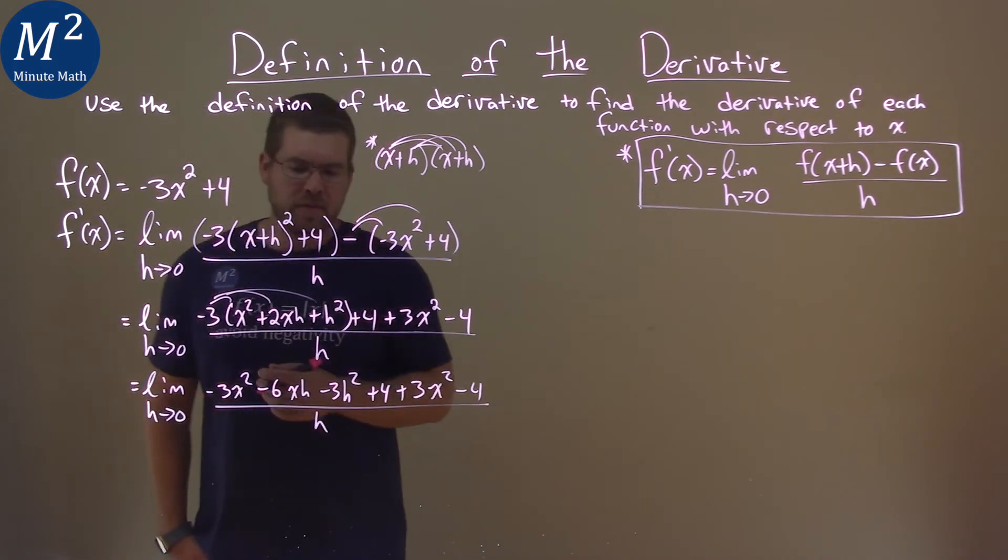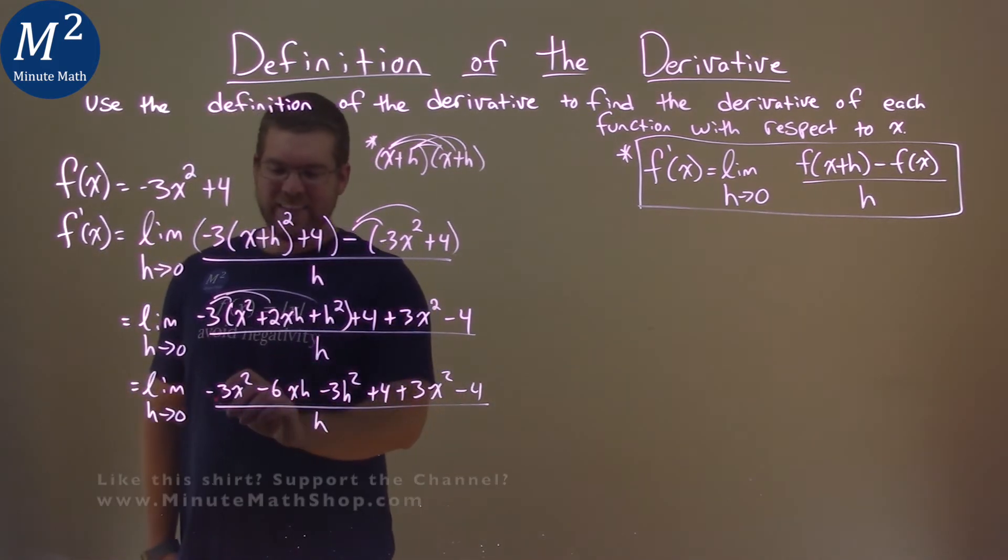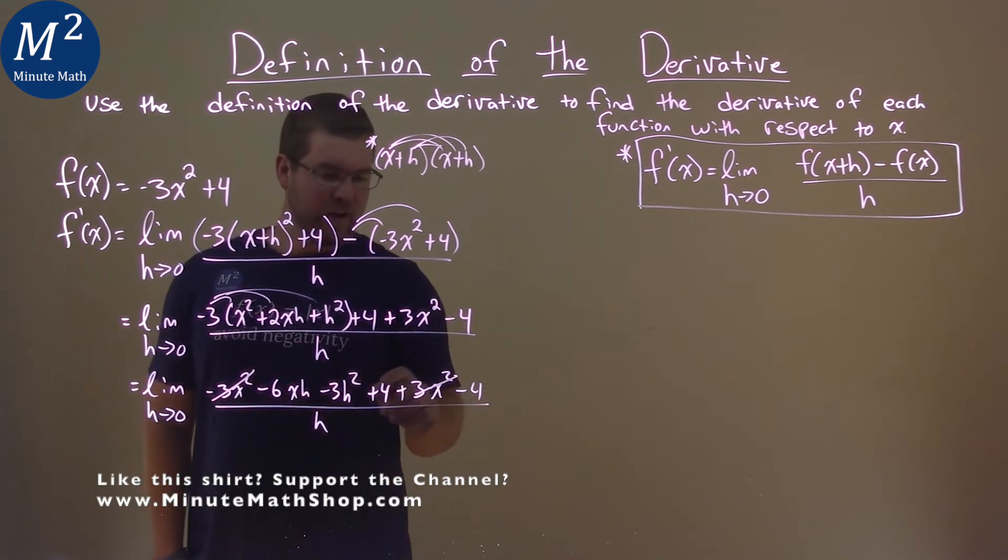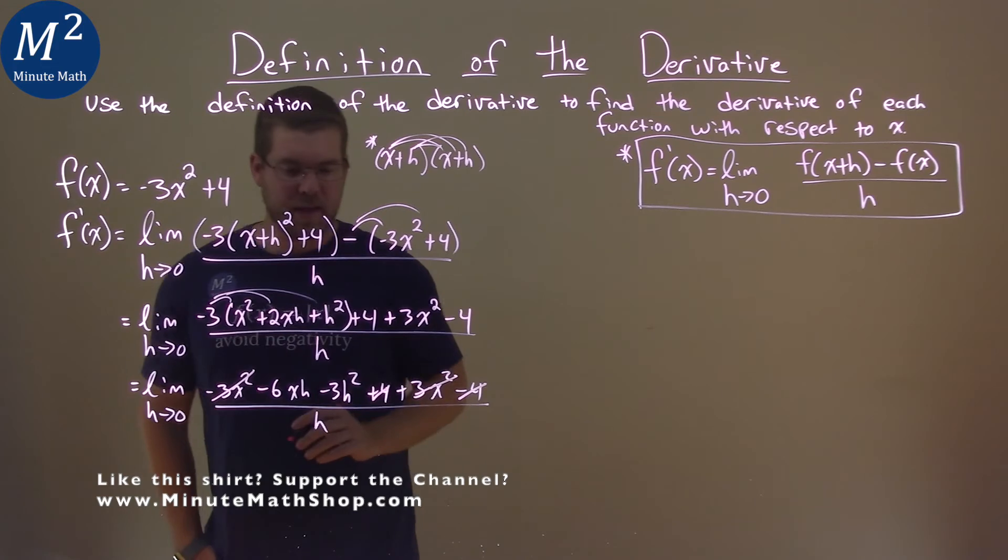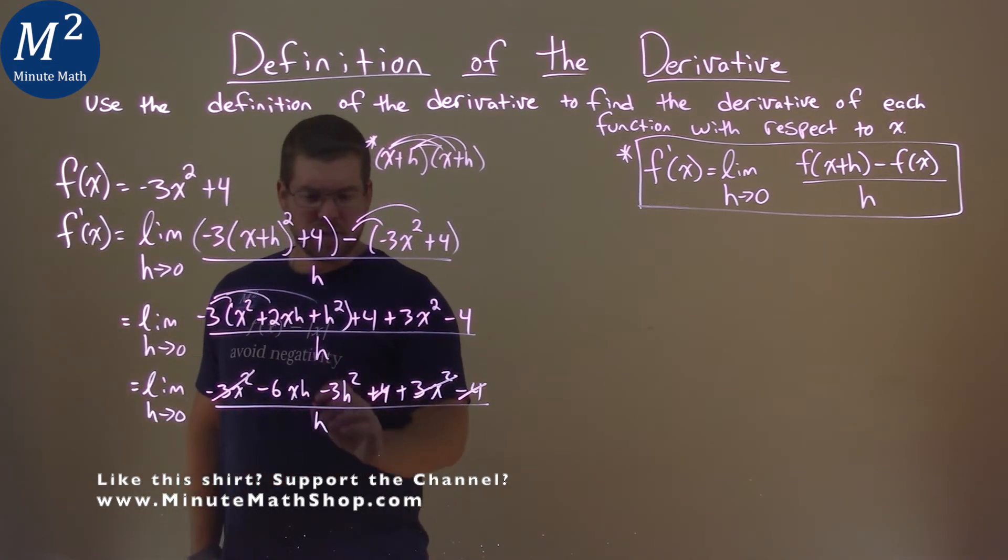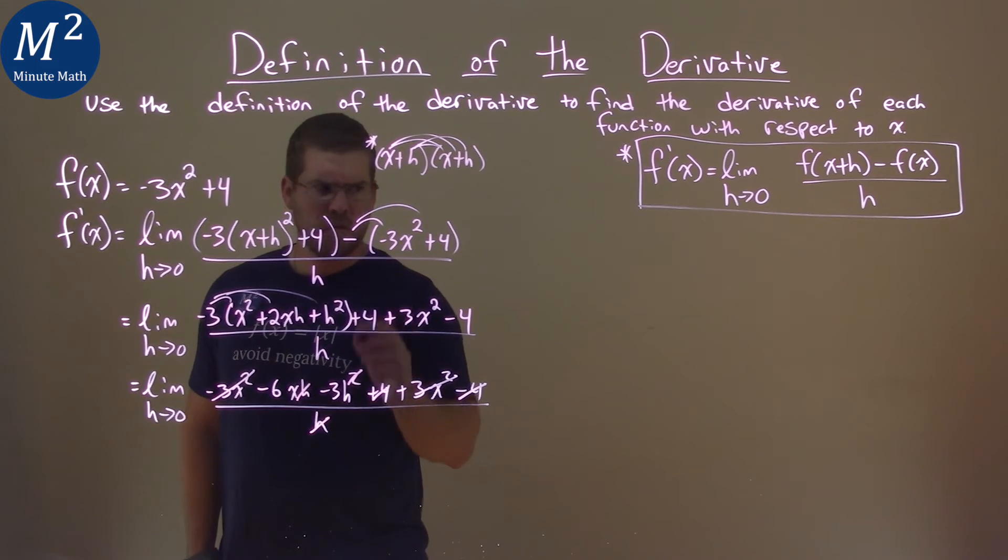Now, this is the beautiful part. The negative 3x squared and the 3x squared cancel. Try to find out other things that cancel, and the 4s cancel. And watch this. Our h's right here on the inside, that's all that's left over. There's 1h here, 1h there, 1 down here. Cancel it out, get rid of the square.